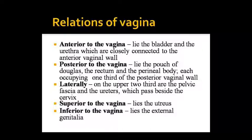Regarding the relations of the vagina — anterior, posterior, lateral, superior, and inferior: anteriorly, the bladder and the urethra are closely connected to the anterior vaginal wall. Posteriorly, the upper one-third of the posterior vaginal wall is related to the pouch of Douglas, which is linked to the rectum and the peritoneal body.